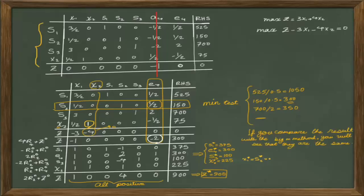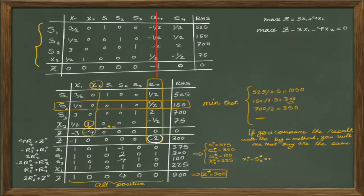The values of the decision variables are read from the simplex table; all other variables not in the basis have a value of 0. The objective function value is 900. This is exactly the same result obtained from the Big M method. In the two-phase method, instead of adding artificial variables with a Big M coefficient to the objective function, we divide the problem into two phases: first minimizing the sum of artificial variables, then solving the original objective function.